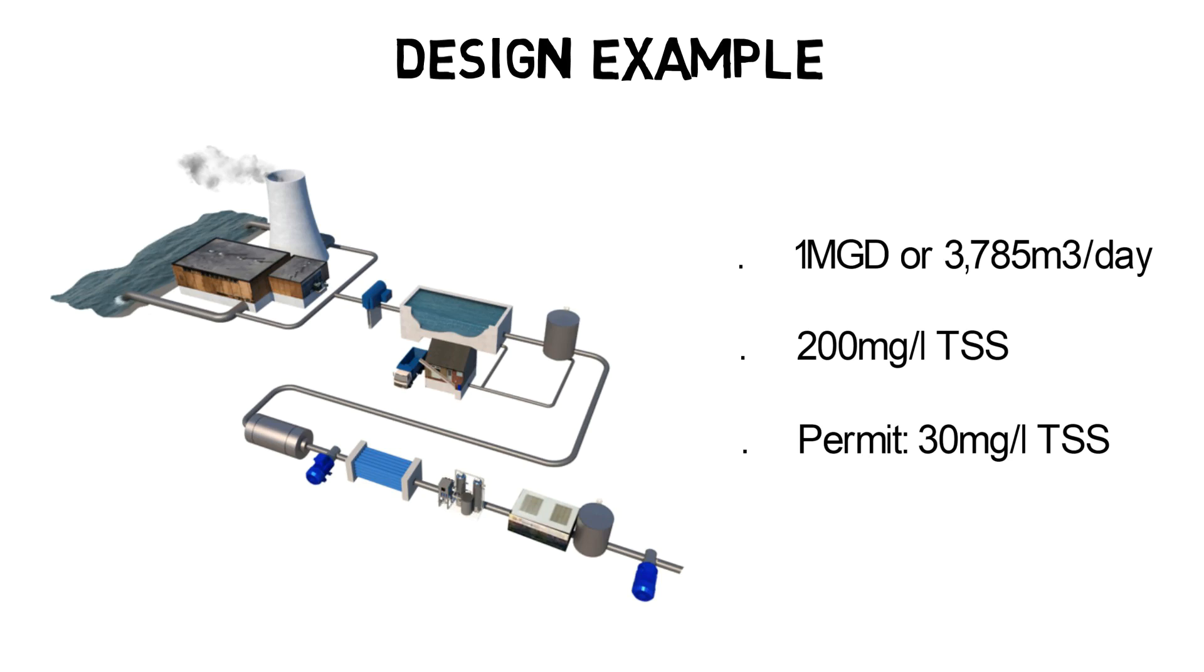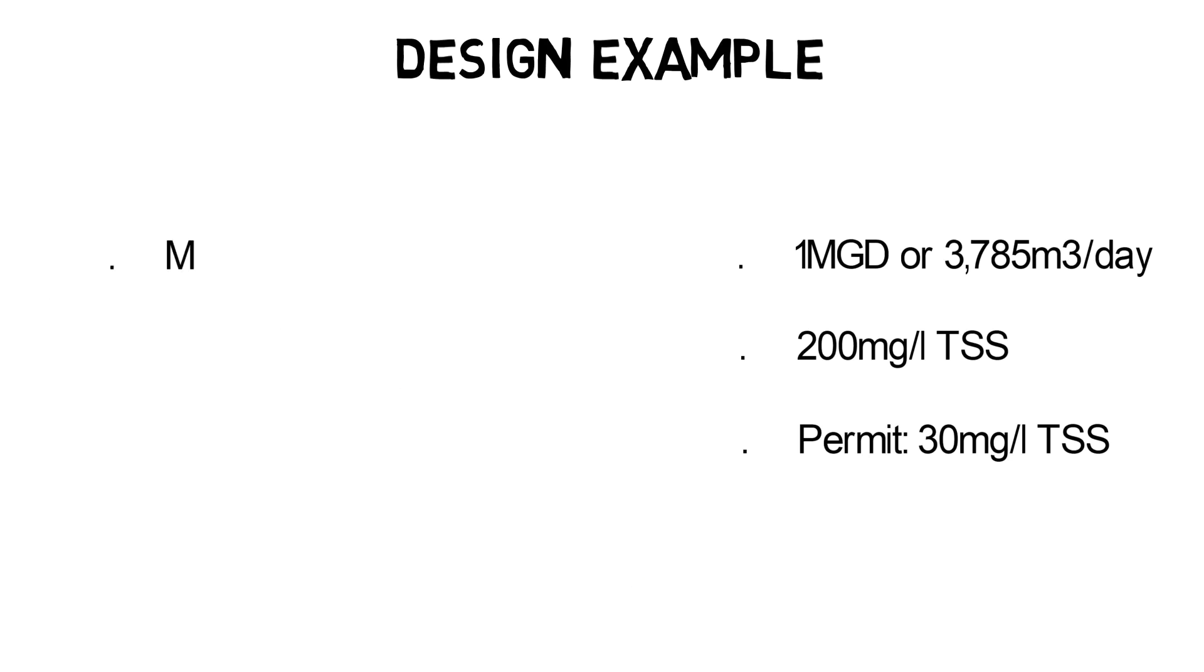In our example, we have mostly sand and gravel that needs to be removed. The minimum particle size is 50 micrometers, and the density delta between the water and the particles shall be 12.5 pounds per cubic foot or 200 kilograms per cubic meter.